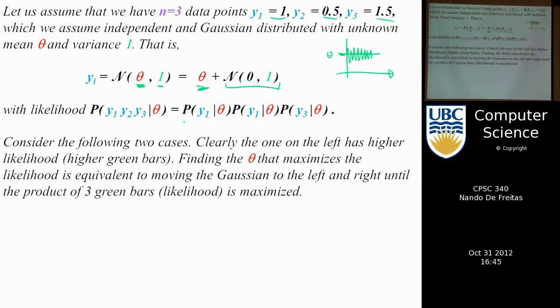There are only three y's. If they're independent, I can write the joint as the product of the three marginals. And now the question is: which θ is the maximum likelihood θ?